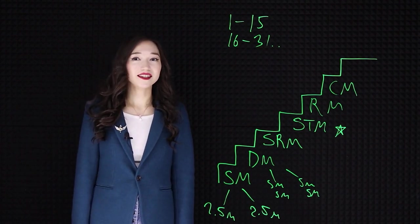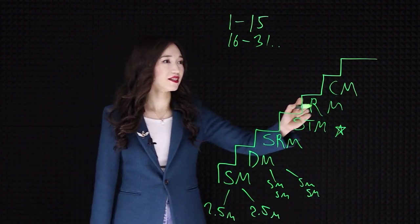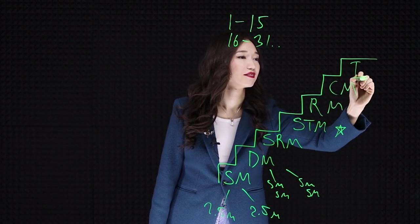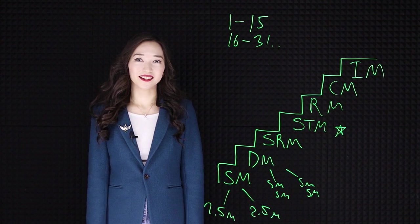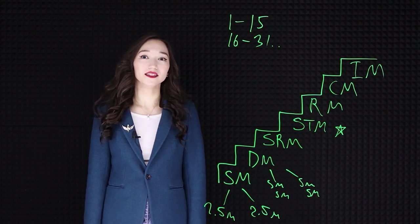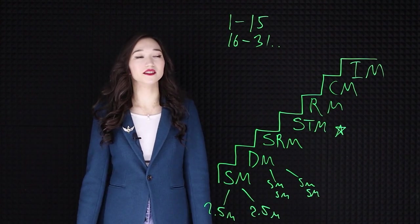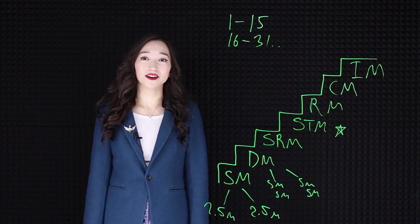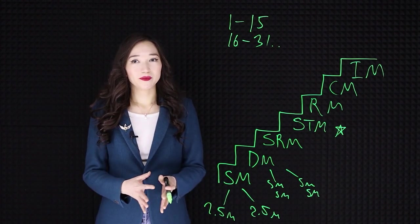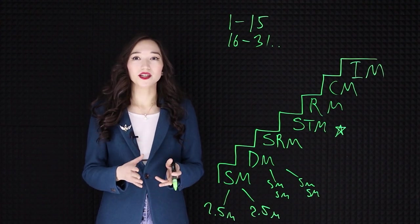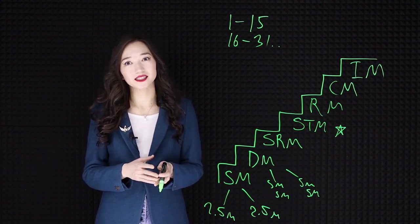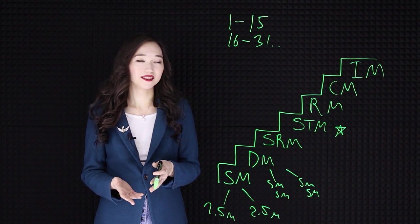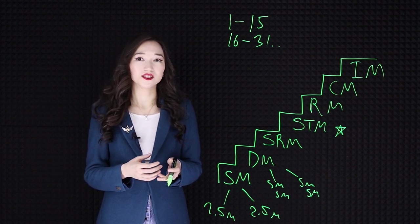And the most desired level is called Imperial Master. On the highest level, as a gift, you get a million dollars. So about a million dollars will be handed to you by the founder of the company. And many other gifts like a luxury car, cruise tickets and office, personal driver and a secretary.